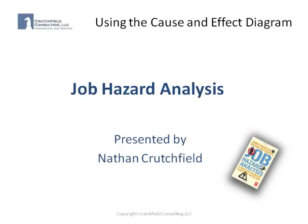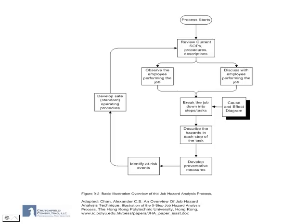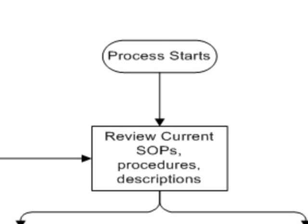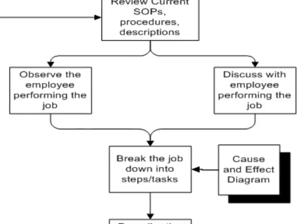Today, I'd like to talk with you a little bit about the use of the cause and effect diagram. The job hazard analysis process begins with a review of the current and existing standard operating procedures and descriptions of the job. This is followed by observations of the employees that may be performing the job and discussions with employees about their concerns and issues while performing the job.